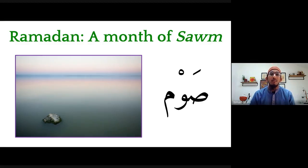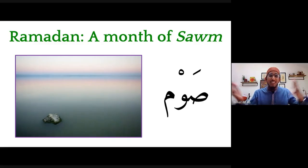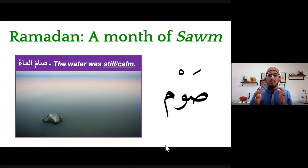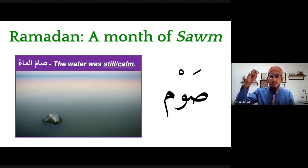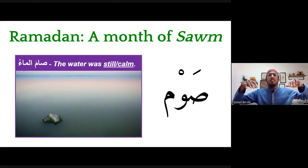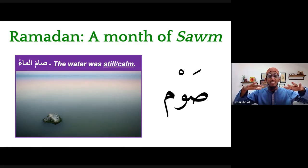If you translate Saum al-ma as we normally would, that would mean the water is fasting — but of course water doesn't fast. So what does it mean? When the Arabs would say Saum al-ma, it means the water was still, the water was calm. Like when you throw a rock in the water and the ripples finish, at that point you would say Saum al-ma. The water became still — it had Sakina, another one of our S's — it became calm.